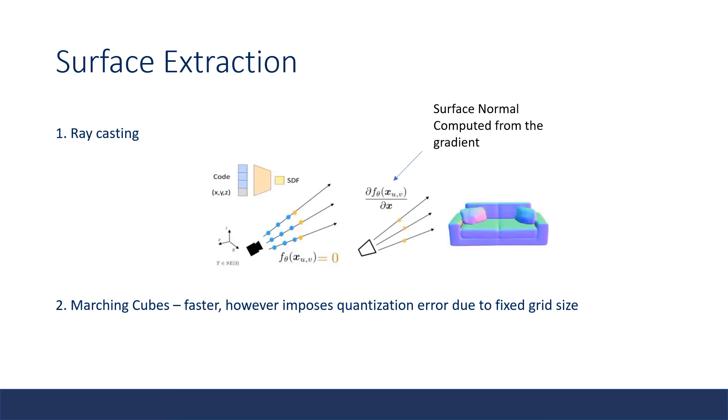Furthermore, a marching cube algorithm can be applied to extract the mesh. While both methods can be used for ISO surface extraction, in practice, marching cube runs faster, but it also imposes quantization error due to fixed grid size.